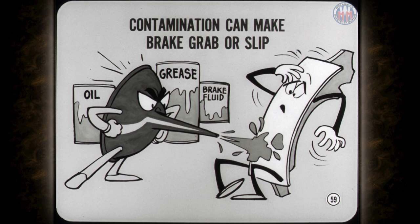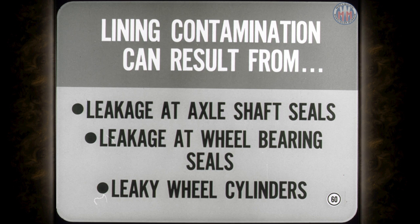And that brings us to lining contamination. Oil, grease, or brake fluid on the lining can make a brake grab or slip. Grabbing also causes brake pull toward the side with the contaminated lining. If it slips, the brake on the opposite side works harder and causes pulling and it wears out sooner. In addition to careless handling, lining contamination can also result from leakage at axle shaft seals, front wheel bearing seals, or leaky wheel cylinders. The lining, of course, must be replaced when other repairs are made.